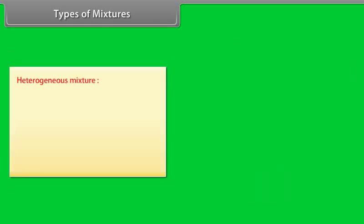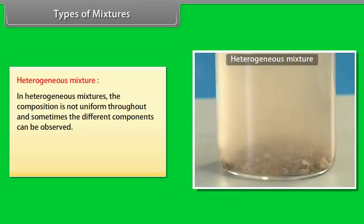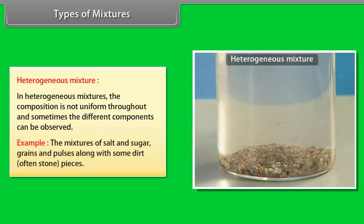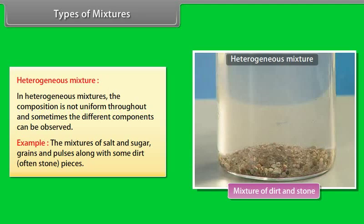In heterogeneous mixtures, the composition is not uniform throughout and sometimes the different components can be observed. Examples: The mixtures of salt and sugar, grains and pulses along with some dirt, often stone pieces.